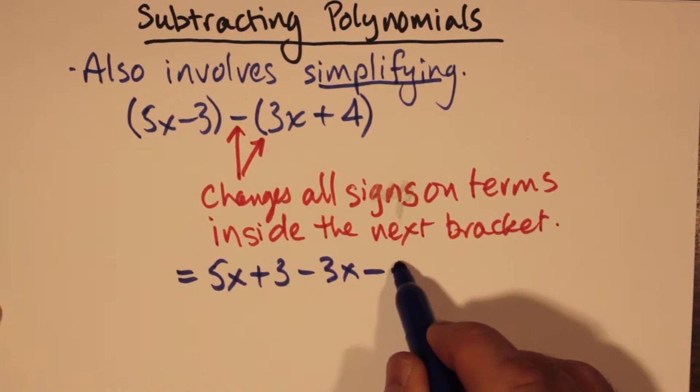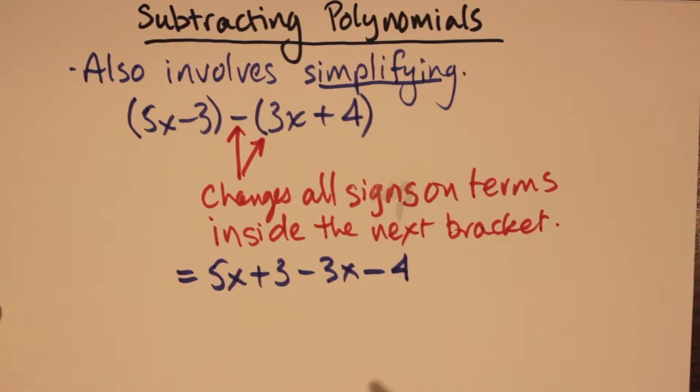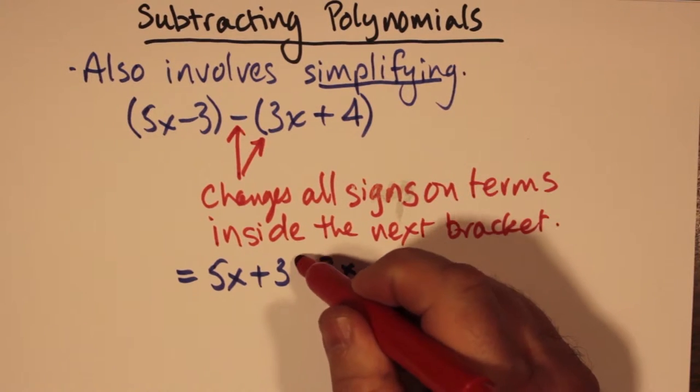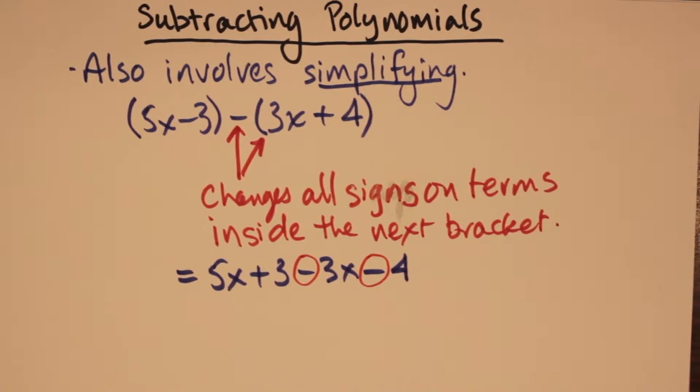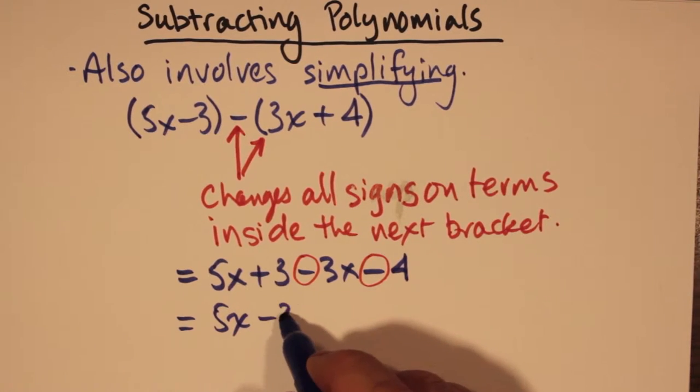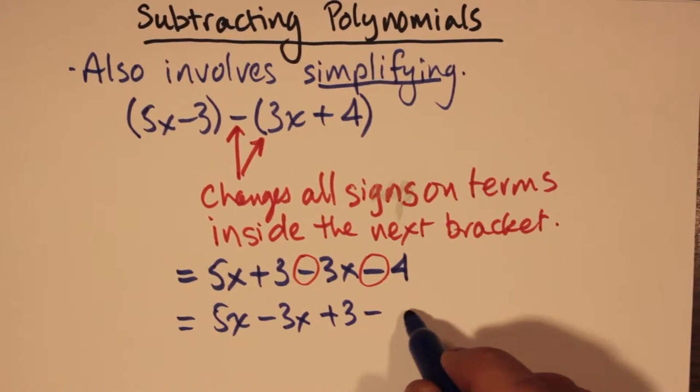That is because the sign in front of the second set of brackets changed the sign in the second set of brackets. When we gather our like terms, we end up with 5x minus 3x plus 3 minus 4. That's when we gather our x's and we gather our constants together.